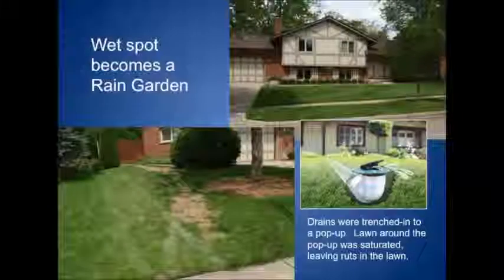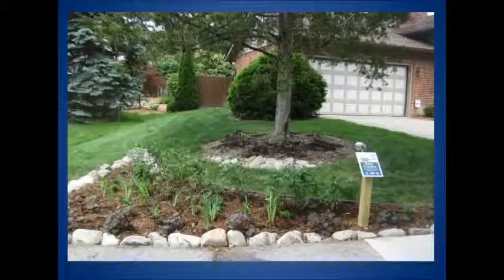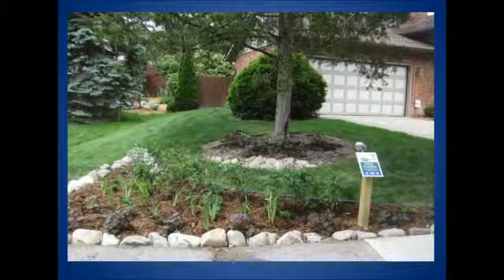Here's a case where the owner ran downspout extensions underground to a pop-up valve and into the lawn — and of course the turf grass can't handle that. The solution was a rain garden, and you can tell by the plants that this is obviously in its first year.